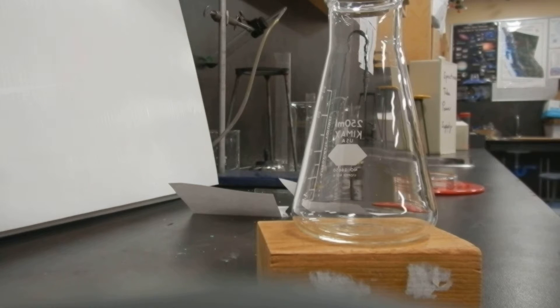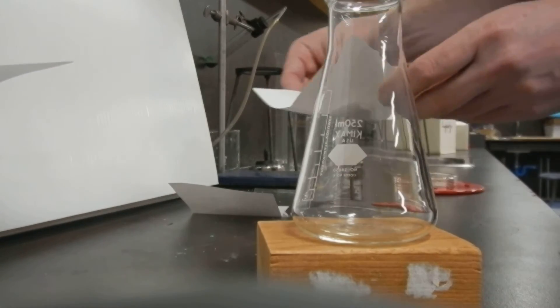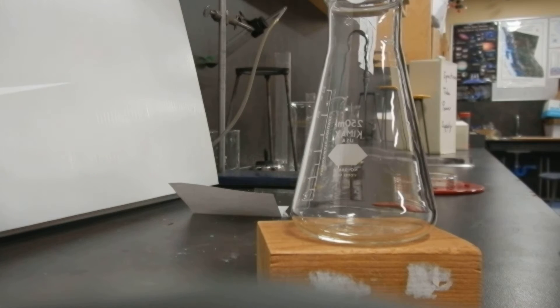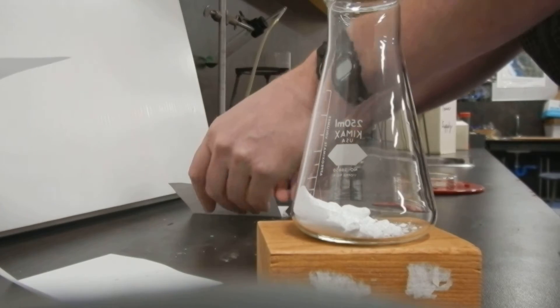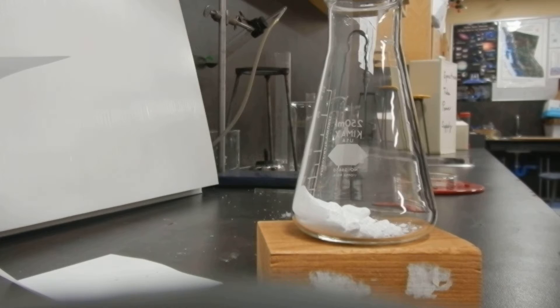I'm going to dump the two white powders together. So one of these powders, this is barium hydroxide. So I'll put it into the flask. And then I have some crystals of ammonium thiocyanate.